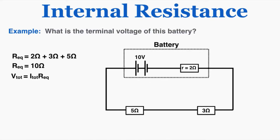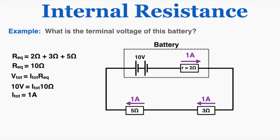Using V equals IR, I can see that the current in this circuit is 1 amp. So if this current is 1 amp, each of these resistors is experiencing 1 amp of current, and I can use that to calculate the voltage drop in each resistor. In the 3 ohm resistor there's a voltage drop of 3, and in the 5 ohm resistor there's a voltage drop of 5, using V equals IR.